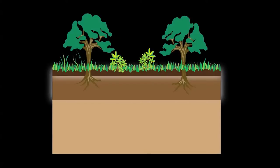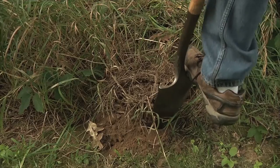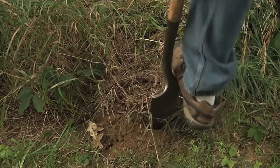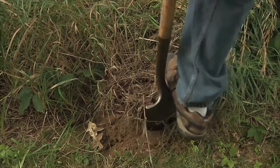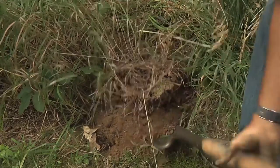As we move down from the top two horizons to the third, or B horizon, we begin to find more clay and rocks in the soil along with less organic matter. Usually, we are only able to see the top few horizons when we dig into the ground.